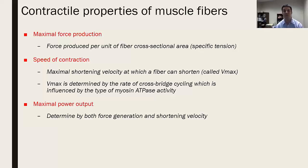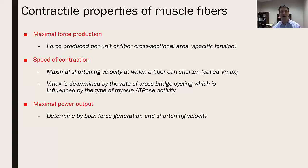The speed of contraction gives rise to the definition of fast twitch and slow twitch muscles. The maximal shortening velocity — how fast it reaches maximal force — is known as Vmax. Vmax is related to that biochemical property and is determined by the rate of cross-bridge cycling, which is determined by the type and rate of myosin ATPase activity. Last but not least is maximal power output — power is essentially force divided by time, so if you generate force and divide it by shortening velocity, you get maximal power output.